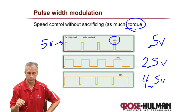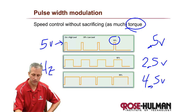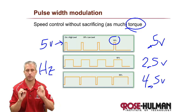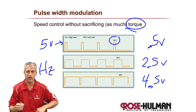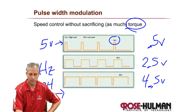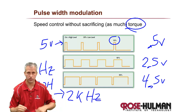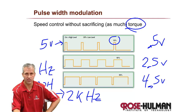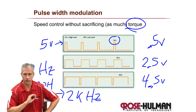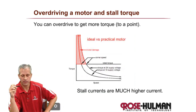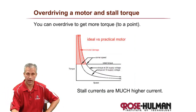PWM frequencies are typically in the hundreds of hertz range. Below about 10Hz you might see the motor jerking start-stop. Above 100Hz it runs smoothly. Around 2kHz works very nicely. Avoid going into the audible range where you'd actually hear the signal. Using PWM at around 2kHz gives clean, smooth speed control for DC motors.